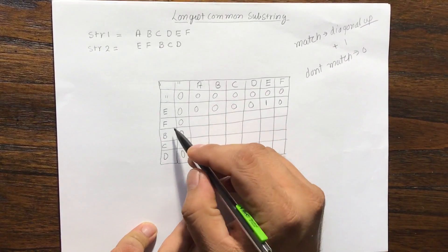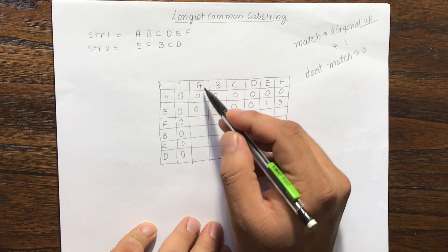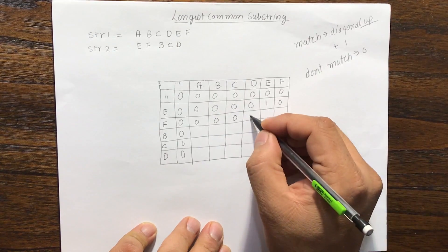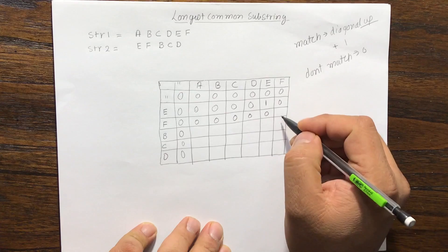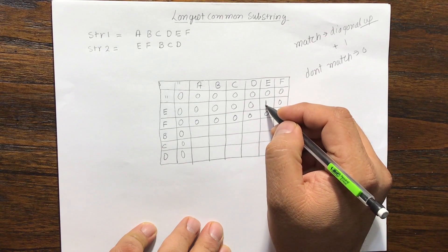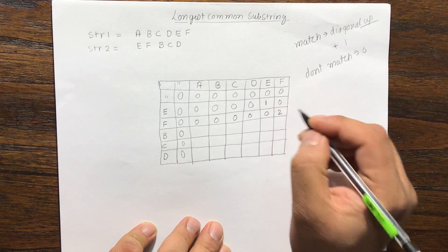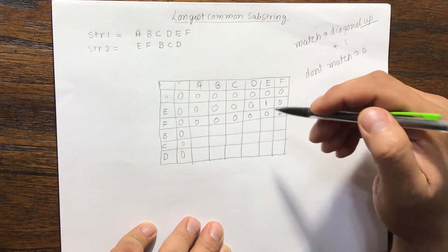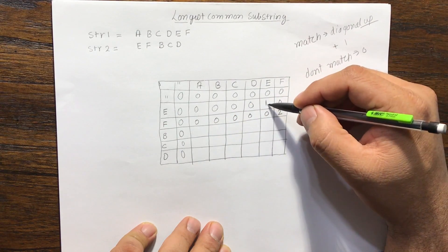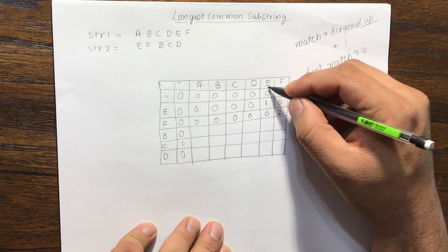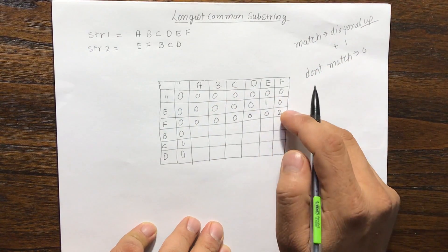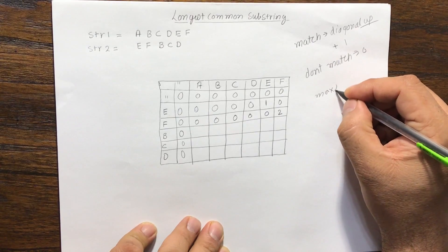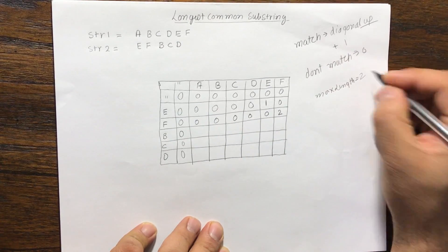Next, for the second string row with e and f: if the second string is e, f and we compare to a, b, c, d, e, f - we get 0, 0, 0 until f and f match. When f and f match, we go diagonally up, which is 1, and add 1 to get 2. This means if the first string was a, b, c, d, e, f and the second string was e, f, the common substring was ef with length 2. We keep track of max length, which is 2 at this point.